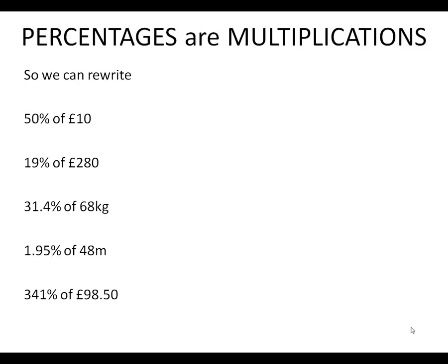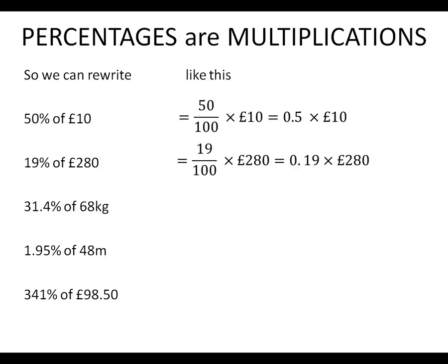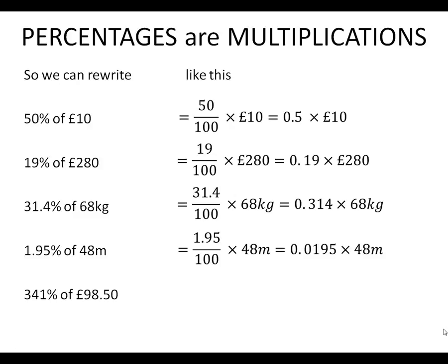We can rewrite percentage problems — such as 50% of £10, 19% of £280, or 31.4% of 68 kg — as multiplication problems. So 50% is simply 0.5 times; 19% is 0.19 times; and 31.4% is 0.314 times 68 kilograms. It doesn't have to be a whole number of percent. All of those percentage problems can be turned into multiplications.